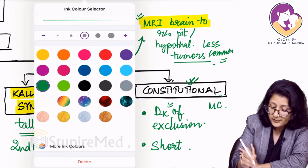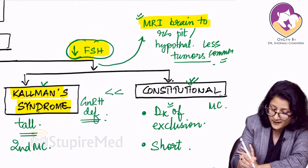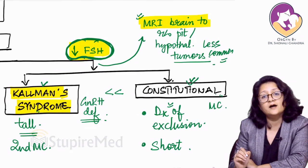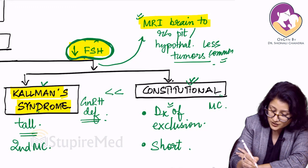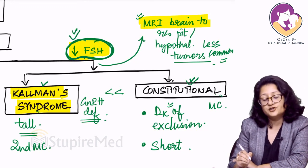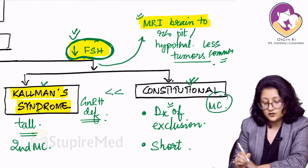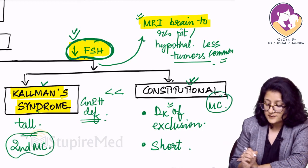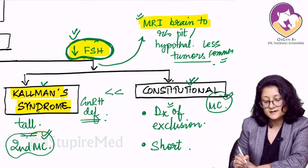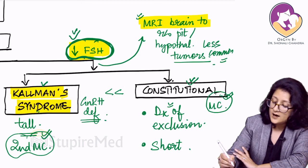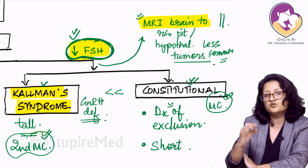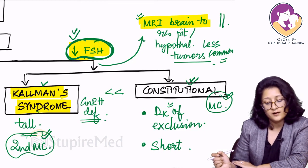When FSH is decreased — that is, in hypothalamic or hypogonadotropic hypogonadism — most commonly we are going to find constitutional as the cause. Second most common is Kallmann syndrome. However, one should also rule out pituitary and hypothalamic tumors, which are less common causes.